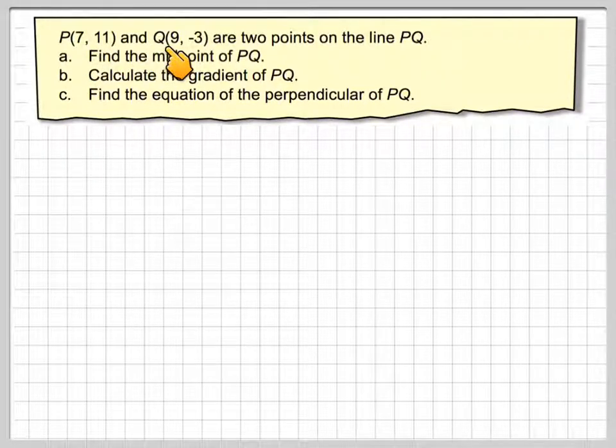P(7, 11) and Q(9, -3) are two points on the line PQ. A. Find the midpoint of PQ, calculate the gradient of PQ, and find the equation of the perpendicular of PQ.